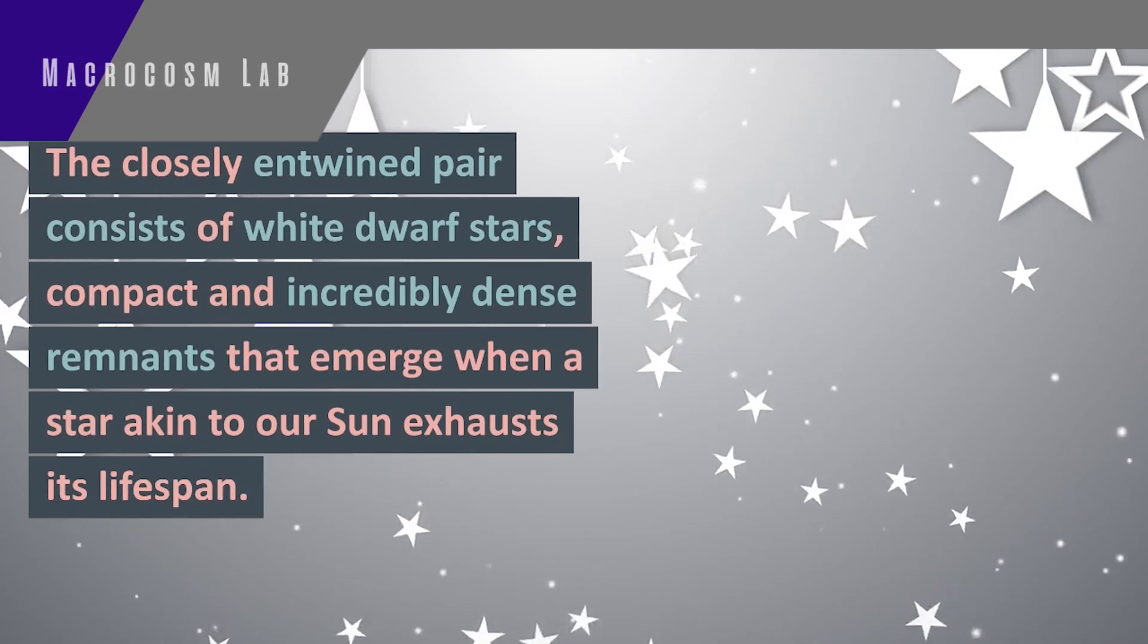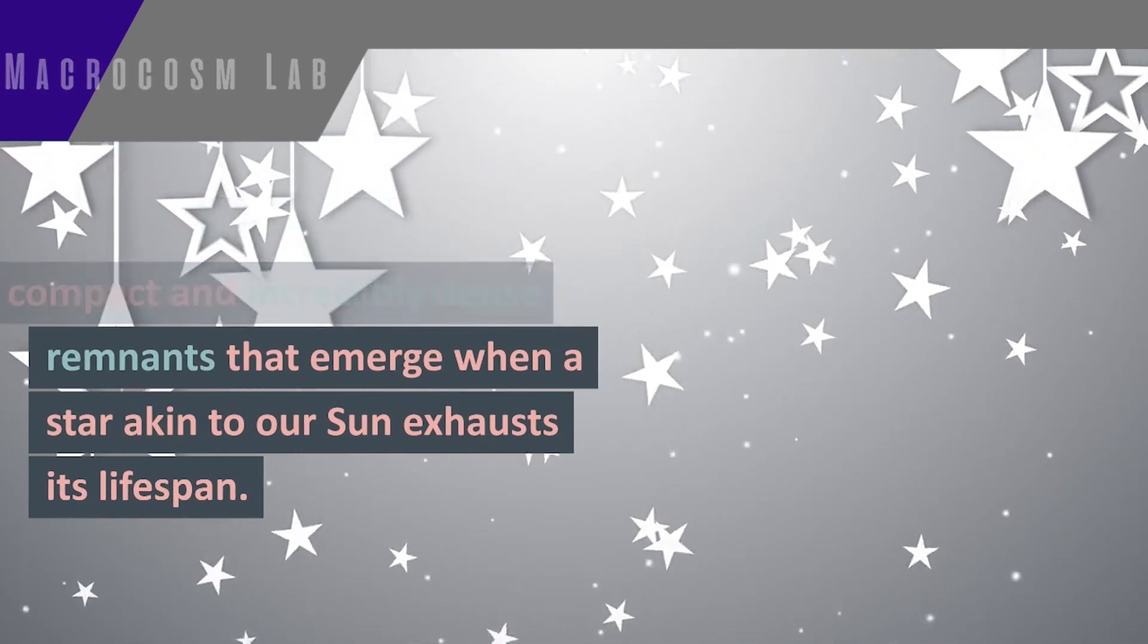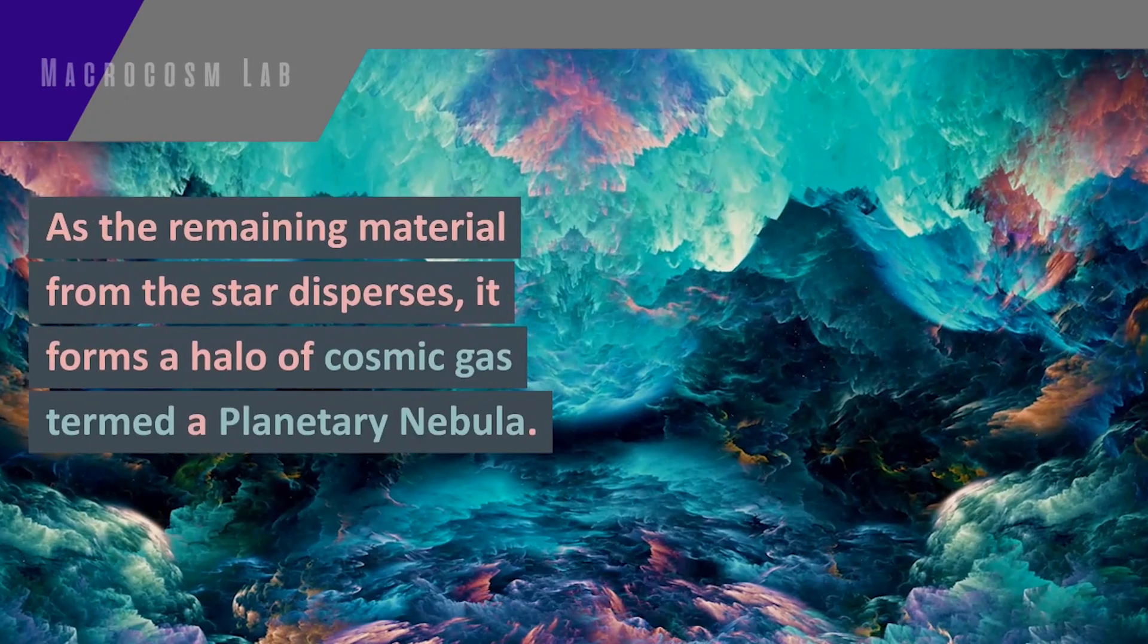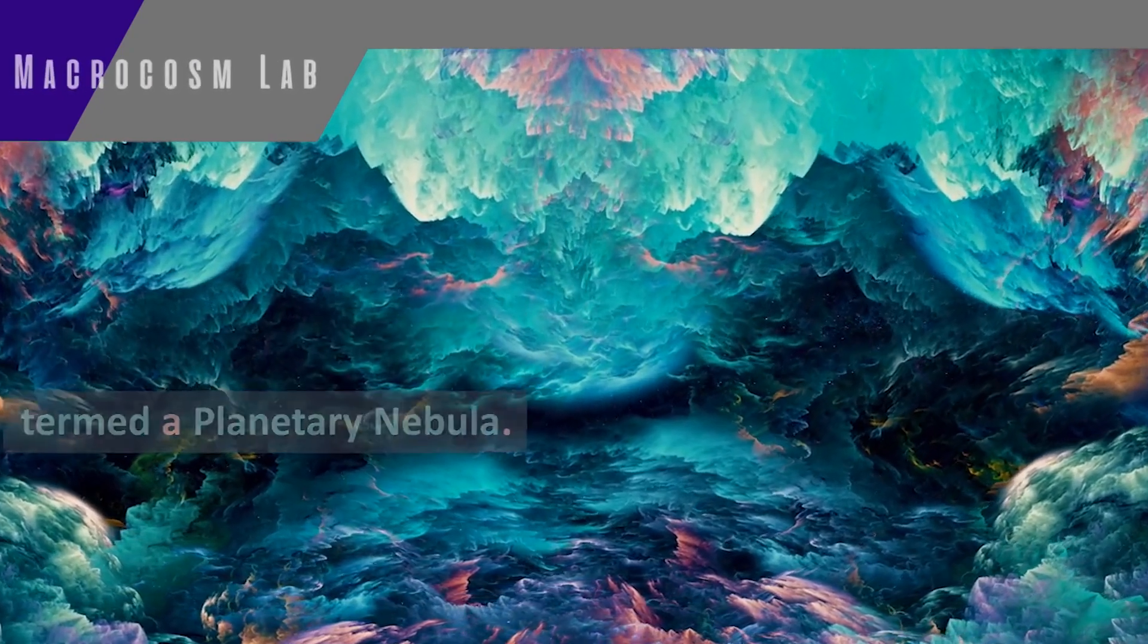The closely entwined pair consists of white dwarf stars, compact and incredibly dense remnants that emerge when a star akin to our sun exhausts its lifespan. As the remaining material from the star disperses, it forms a halo of cosmic gas termed a planetary nebula.